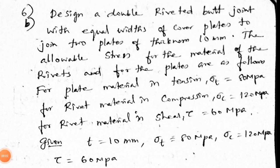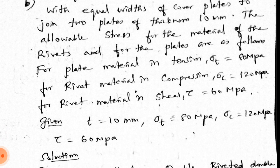Design a double riveted butt joint with equal widths of cover plates to join two plates of thickness 10 mm. The allowable stresses are: for plate material in tension, sigma_t = 80 MPa; for rivet material in compression, sigma_c = 120 MPa; for rivet material in shear, tau = 60 MPa.